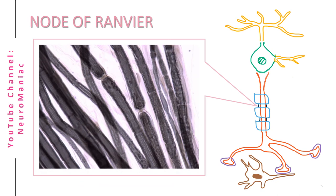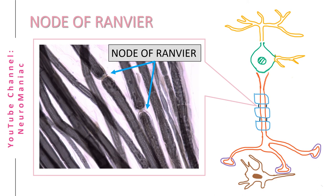What are these straw-like figures you see in the image? They're axons! If you take a closer look, there are pinch points here and here, which are the nodes of Ranvier. These nodes are important as they are the sites of saltatory conduction, which prevents action potential decay along the axon.